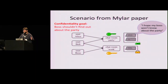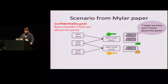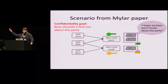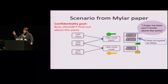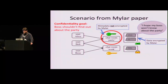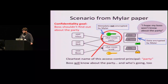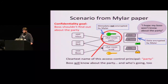To see how metadata can leak information, we need look no further than this diagram from the Mylar paper. Two users of a chat application are talking about a party they want to go to, and they have a boss they don't want to know about the party — the text literally says 'I hope my boss won't know about the party.' The chat data itself is encrypted by Mylar, but the metadata is not. In particular, there's an access control principle corresponding to a search encryption key, and the name of this principle is in plain text — in this scenario, it's 'party.' The clear conclusion is that the boss will know about the party, and will also know exactly who's going to the party, because the users' access control relationships aren't encrypted either.